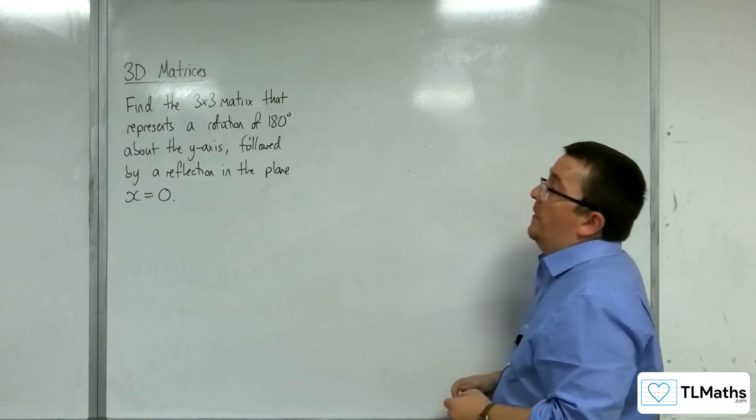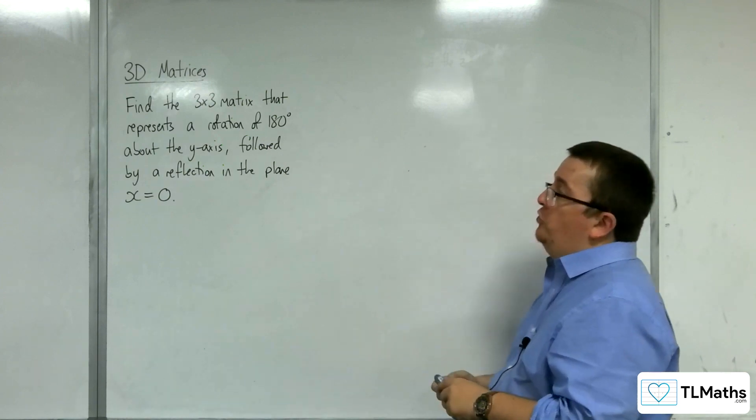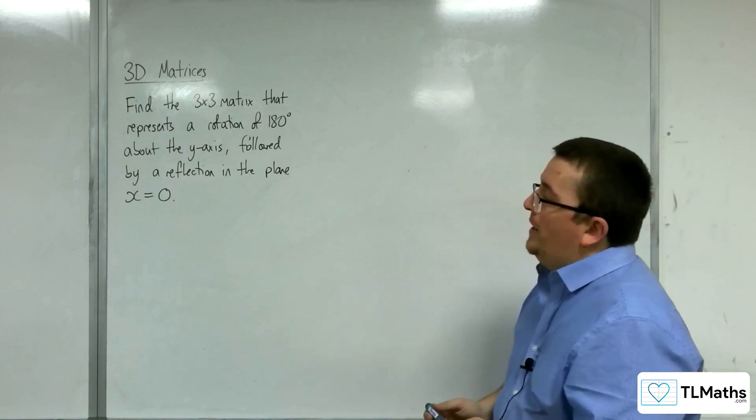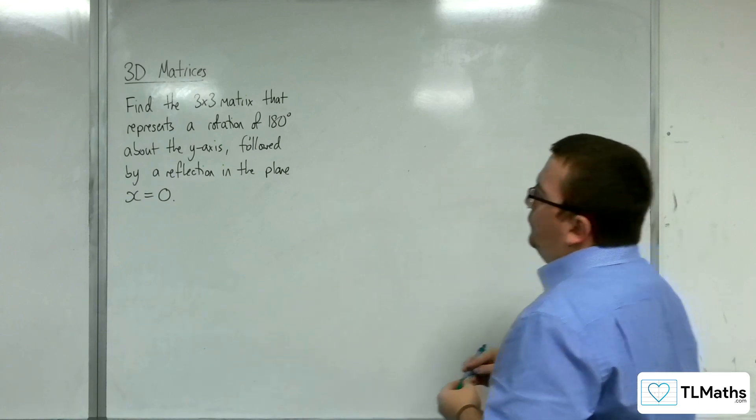So, in this problem, what we need to find is the 3x3 matrix that represents a rotation of 180 degrees about the y-axis, followed by a reflection in the plane x equals 0. Okay, so we're going to need to find these two matrices.